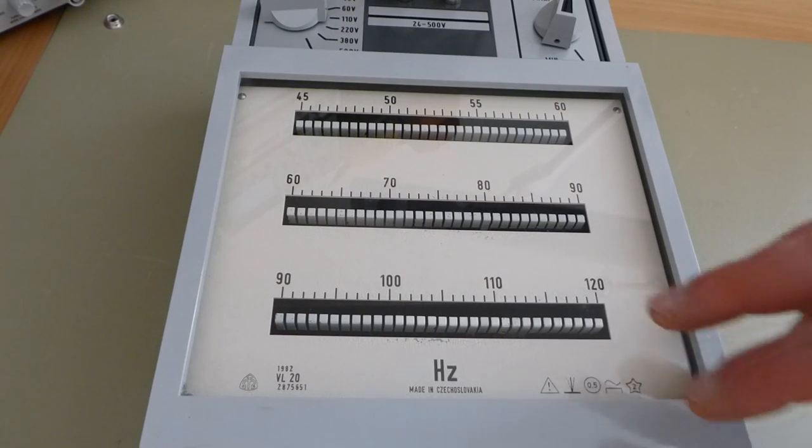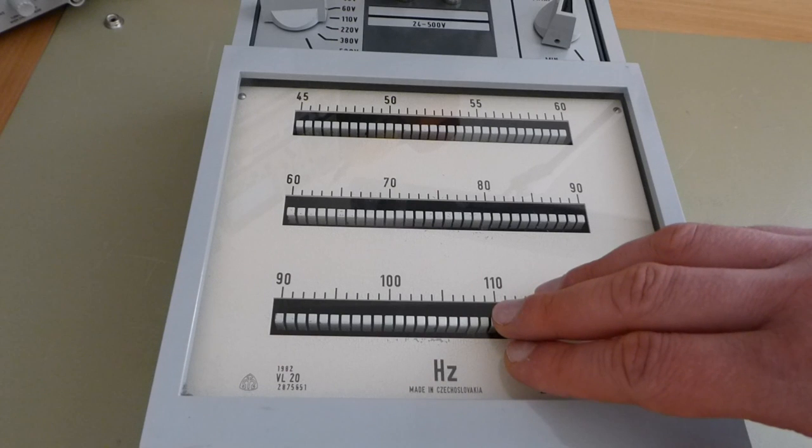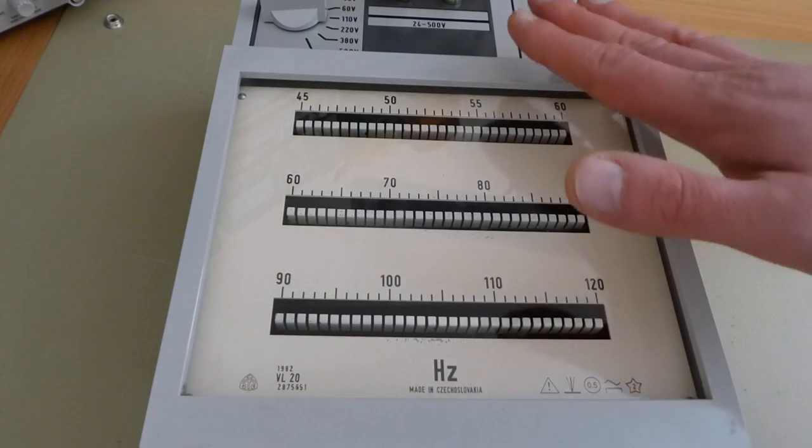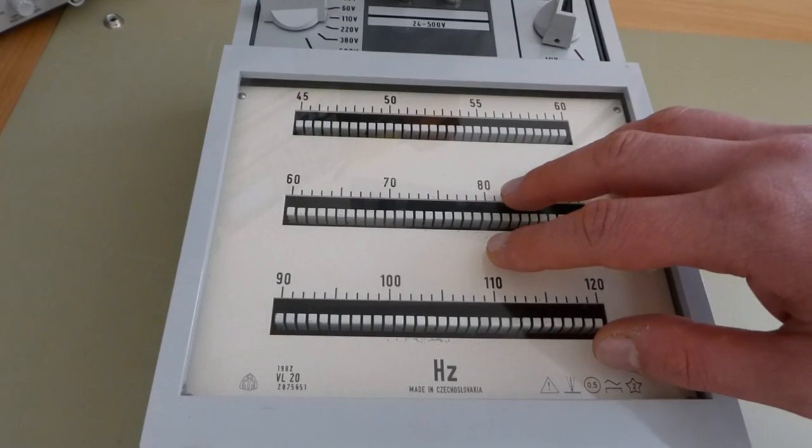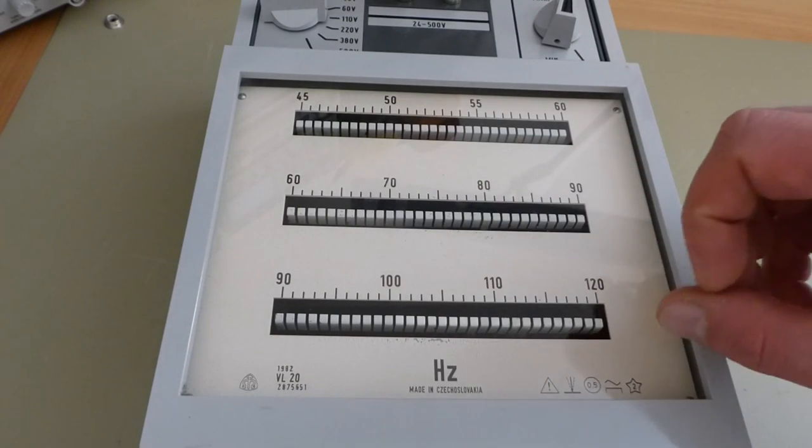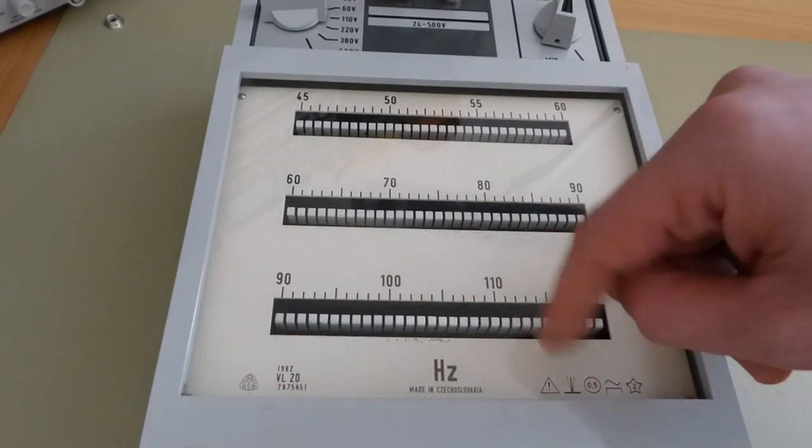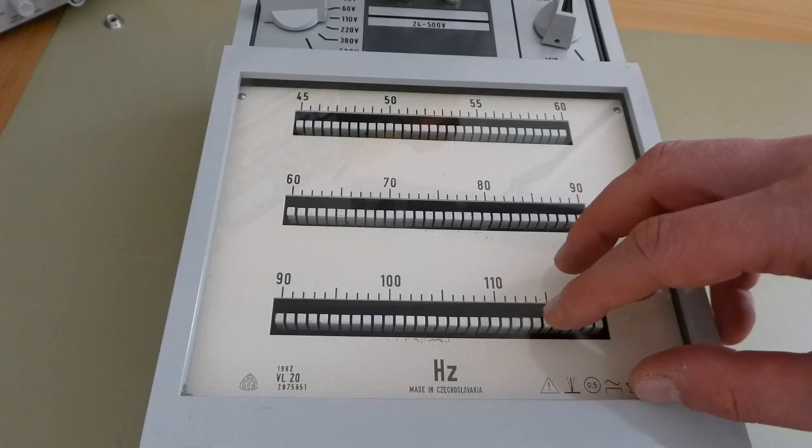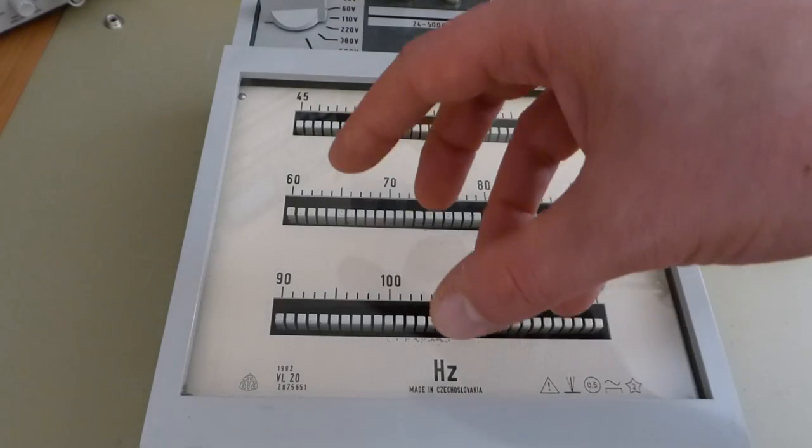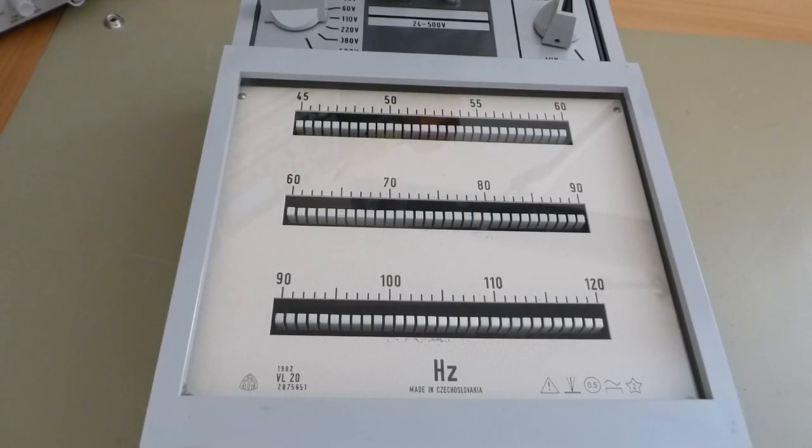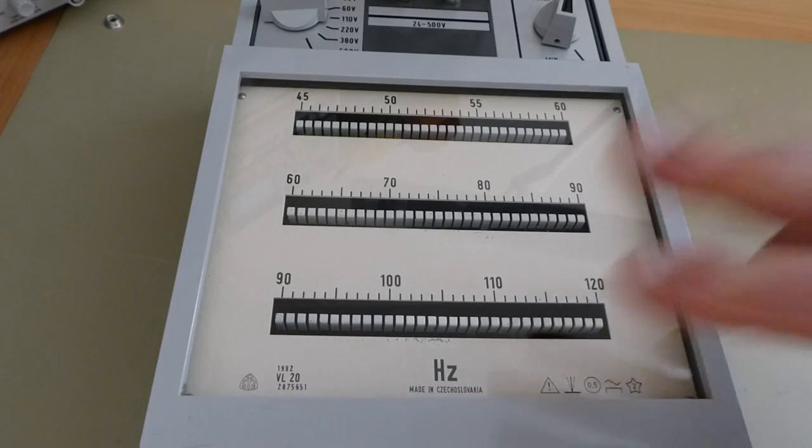Also, as a side note, there were purely mechanical versions of these as well to be used as tachometers. So this one is for measuring electrical frequencies, but you could also get literally just a bank of reeds without any of the electromagnets, and you could place them on an electric motor and pick up the vibrations from there and hence measure the RPM. But again, that's quite obsolete nowadays. But anyway, that's enough talking about it.